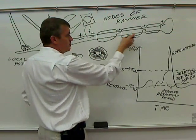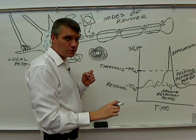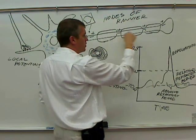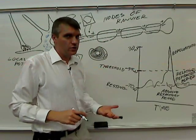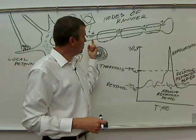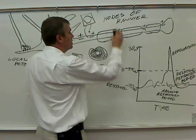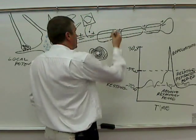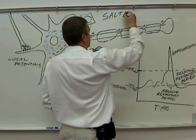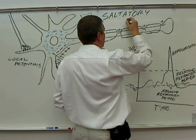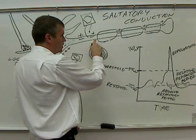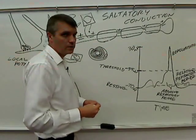Understand that the reason that myelin allows an action potential to travel faster is because that action potential jumps from node of Ranvier to node of Ranvier to node of Ranvier. So it can just go a lot faster. It doesn't have to touch every bit of the membrane. That jumping from node of Ranvier to node of Ranvier to node of Ranvier has a name. It's called saltatory conduction. Jumping from node of Ranvier to node of Ranvier to node of Ranvier. Saltatory conduction.